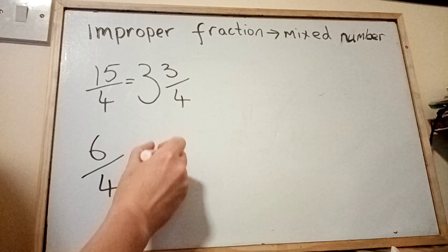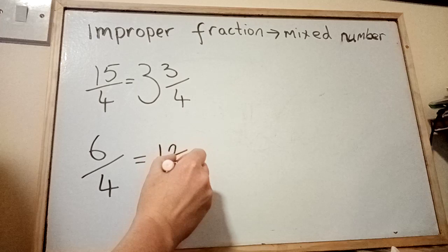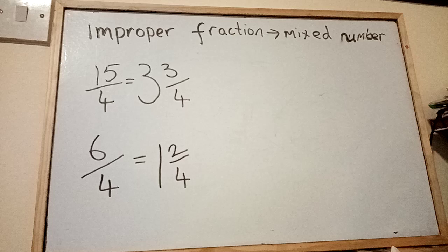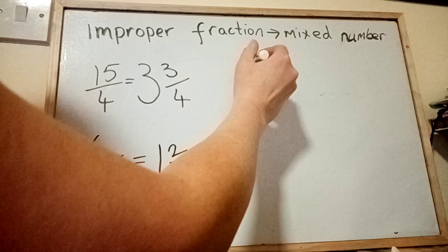So it goes in once, with how many left over? 2. So it's 1 and 2 over 4. Okay, we can simplify that down, but I'm just not going to do that at the moment. We're just going to focus on one thing.